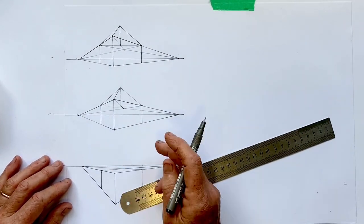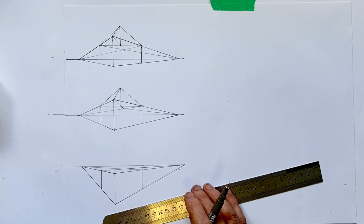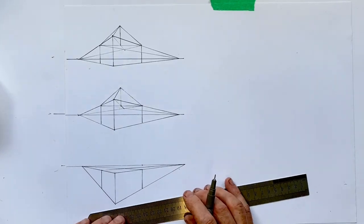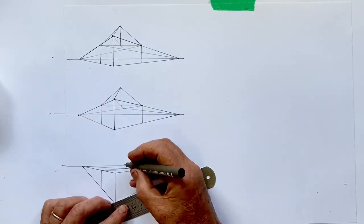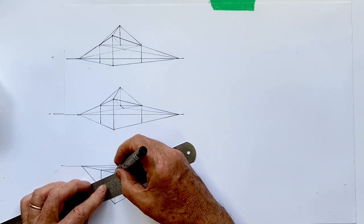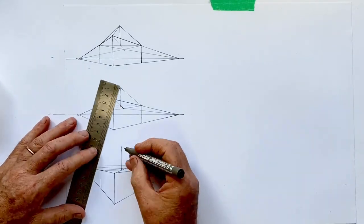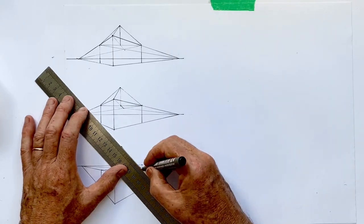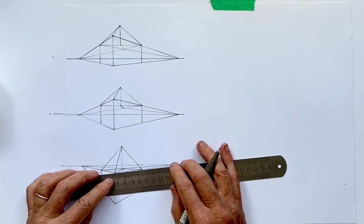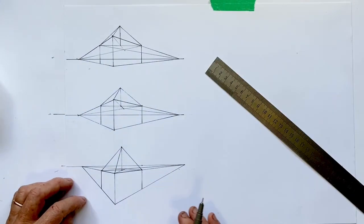How does it look when we're above looking down on our building? Again, we start with the diagonals. And here we have it. We're looking almost straight on to the pyramid roof on top.